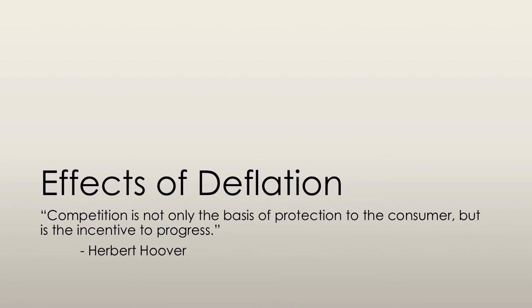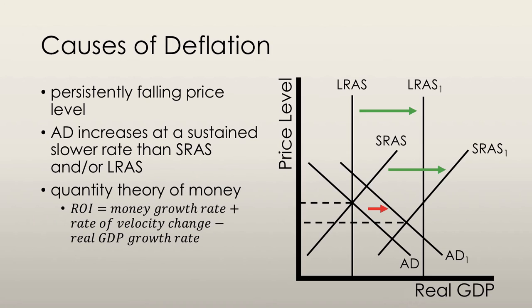We're just taking a look at the types and causes of inflation, but let's examine the effects of deflation. Deflation is defined as a sustained decrease in the general price level. A persistently falling price level only occurs if aggregate demand increases at a persistently slower rate than short-run aggregate supply and or long-run aggregate supply.